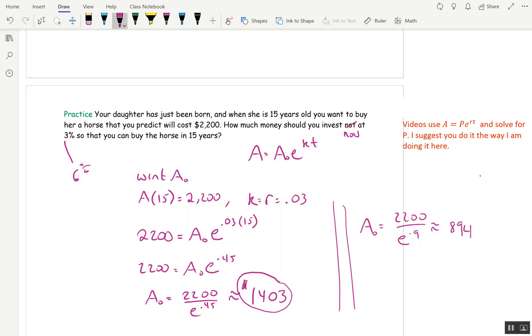And you get A₀ is 2200 over E to the 0.9, which is a little more reasonable. That turns out to be $894. I think the moral here is that you need to find a money market account, which is going to get you a little higher interest rate than 3% or 6%, or hopefully your daughter won't want a horse ever because they're so expensive, or maybe she'll want one in 30 years, and then you can invest a little bit less now, or tell her to get a job and buy her own horse. Okay. So that's the end of this section.